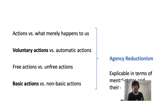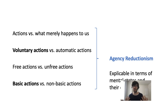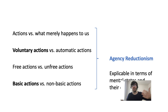The causal theory of action as presented is a theory of basic actions and of voluntary actions. At least it explains these two aspects of agency just in terms of the agent's mental states and their causal role. There's a position that Franklin calls agency reductionism, which holds that all aspects of agency are explicable just in terms of the agent's mental states and their causal role. This will be important because Franklin presupposes agency reductionism in his defense of libertarian free will. This approach is reductive because it explains all aspects of agency just in terms of the mental states of the agent.